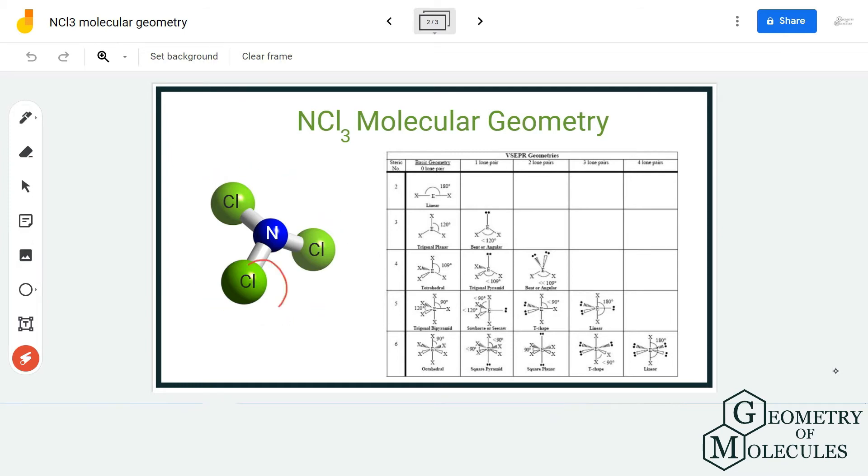But as there is a lone pair of electrons on the nitrogen atom, it might distort its shape a little bit. So to confirm it further, we are going to find out the steric number for this nitrogen atom and determine its molecular geometry.